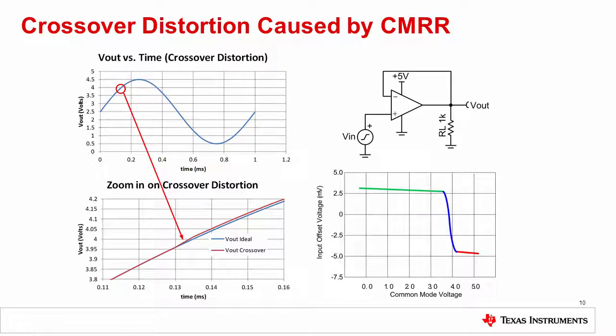Rail-to-rail amplifiers use two different internal input stages to achieve input voltage range from the negative supply to the positive supply. The problem with most rail-to-rail amplifiers is that they will have a jump in the input offset voltage when the common mode voltage reaches the point where we transition between the two input stages.